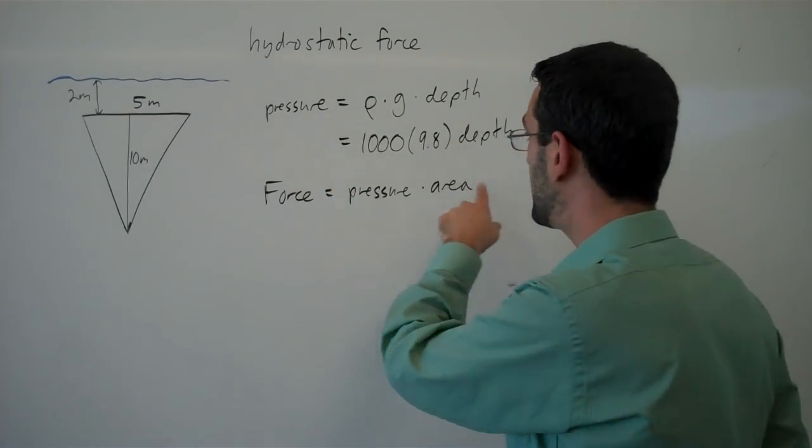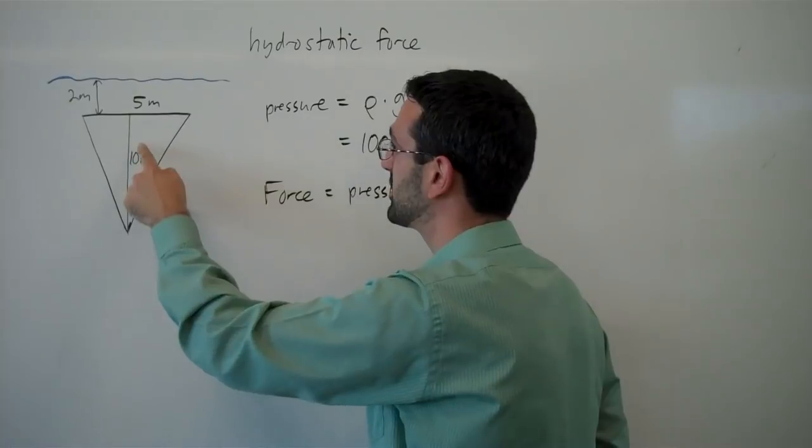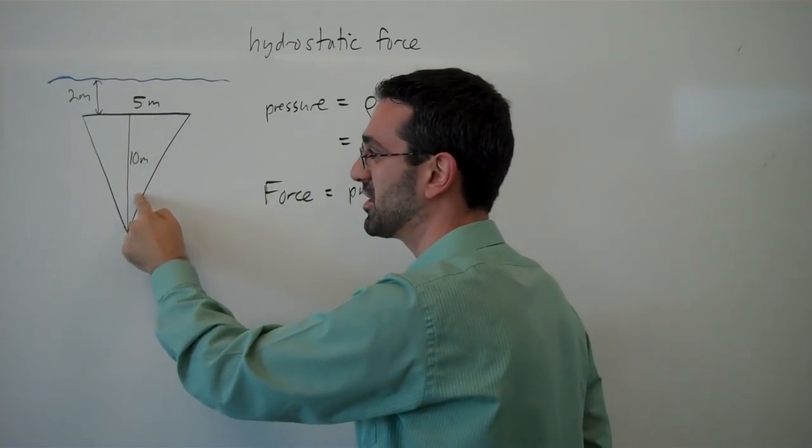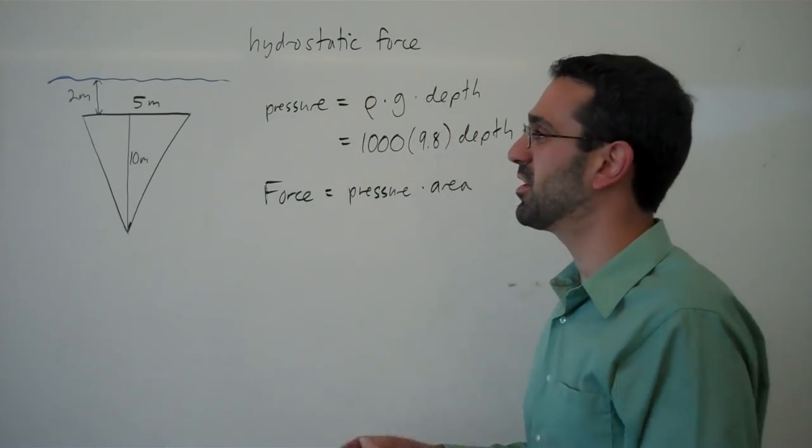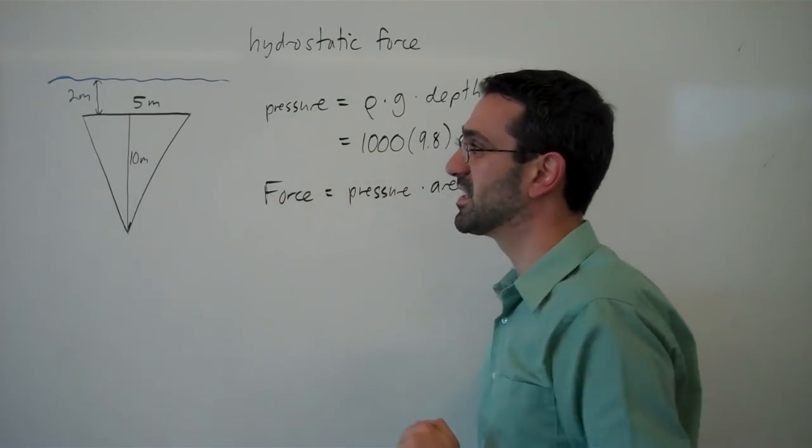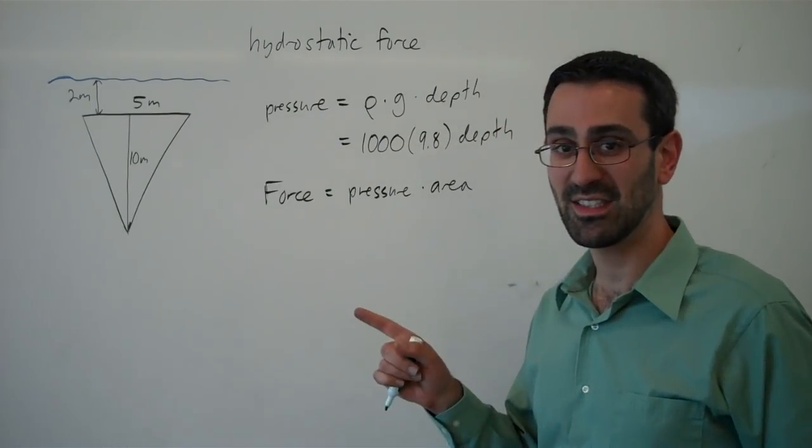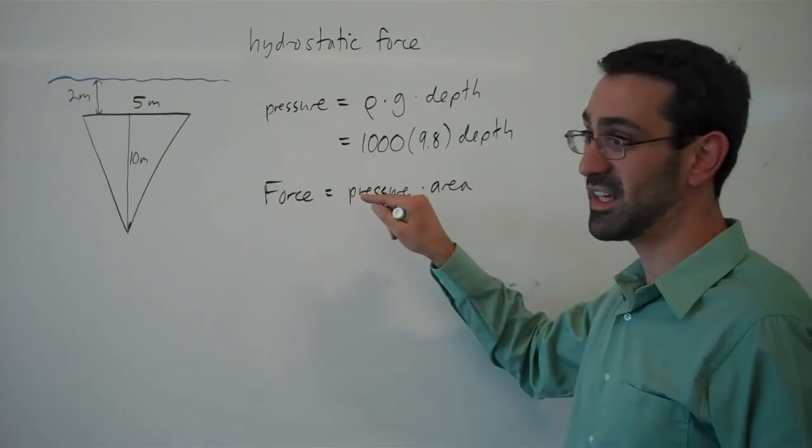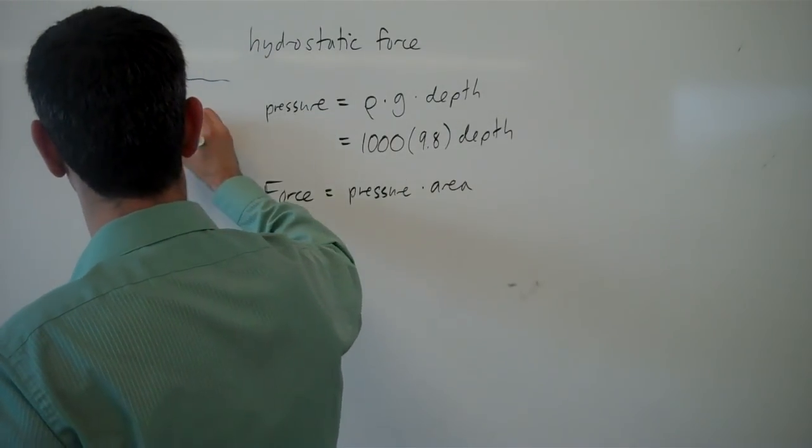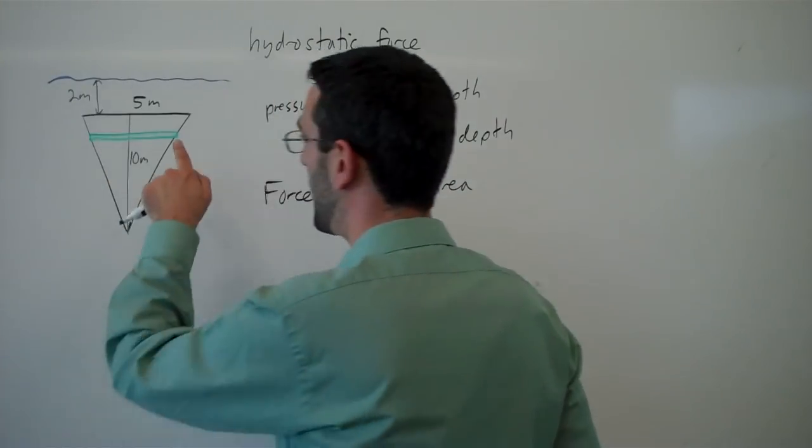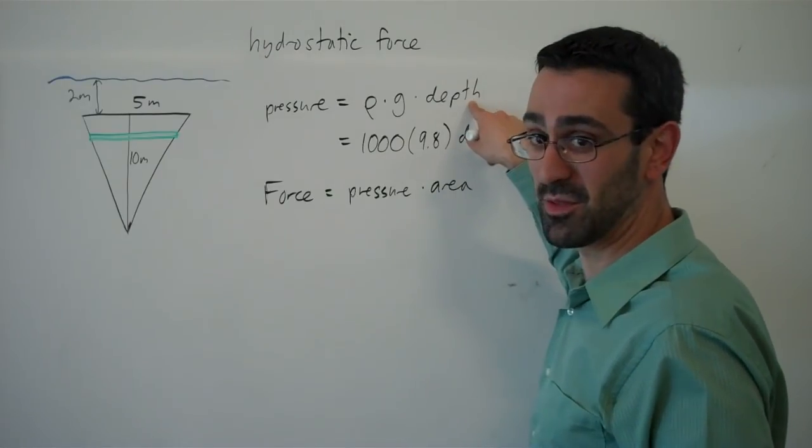The trick here is this depth. The pressure here is going to be different than the pressure there because of the depth. We want to break apart our face into pieces that are at a constant depth, which means we need to slice this horizontally. Everywhere on that slice, the pressure will be the same because every point on that slice is essentially at the same depth.